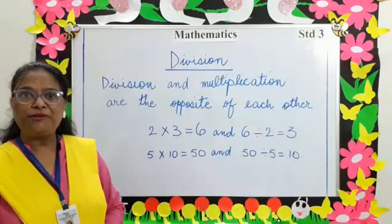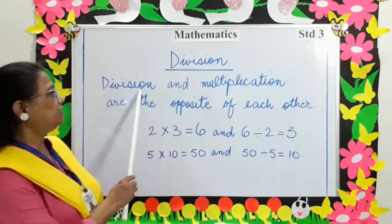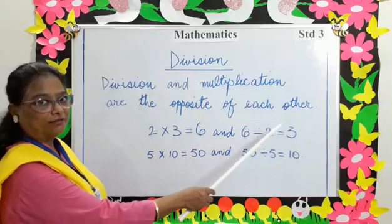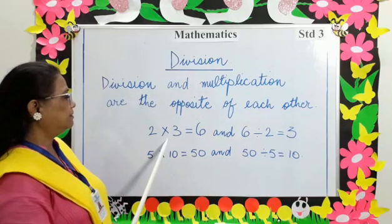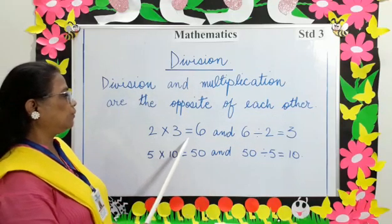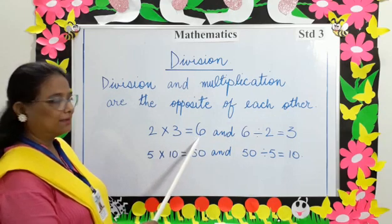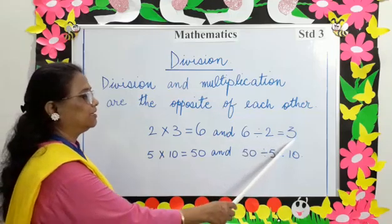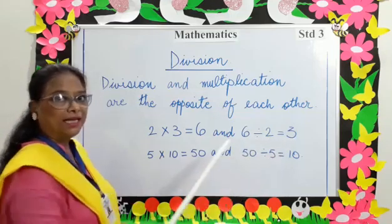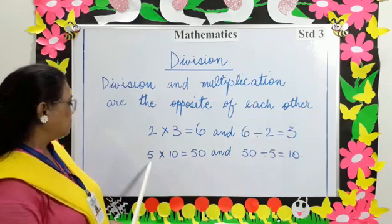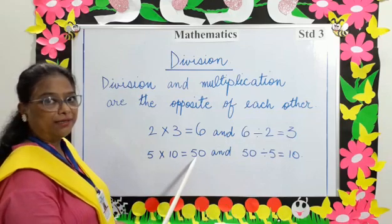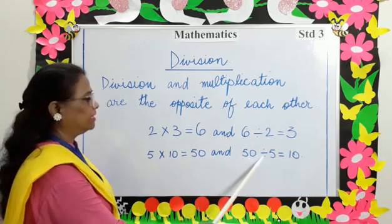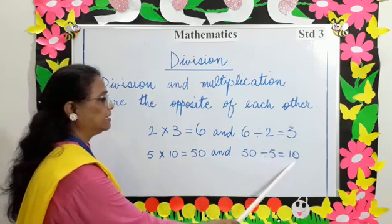One thing to remember is division and multiplication are the opposite of each other. For example, 2 multiplied by 3 equals 6, and 6 divided by 2 equals 3. Another example: 5 multiplied by 10 equals 50, and 50 divided by 5 equals 10.